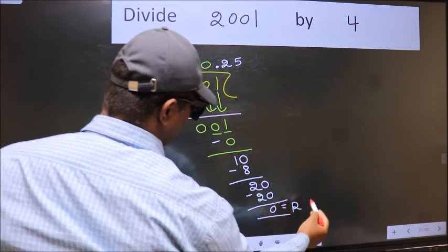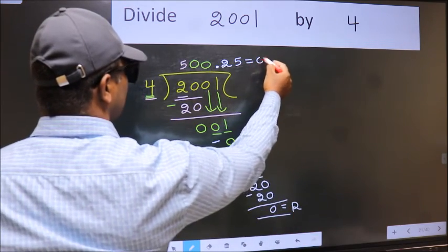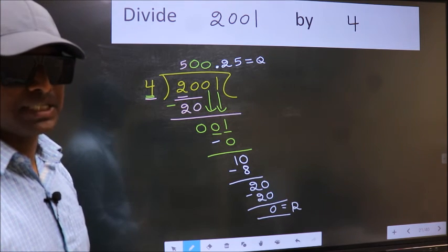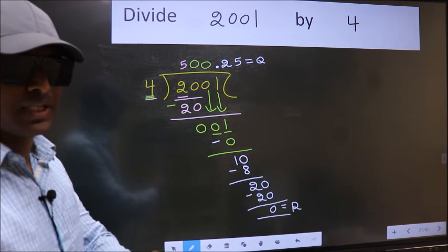This is our remainder and this is our quotient. Did you understand where the mistake happens? You should not do that mistake.